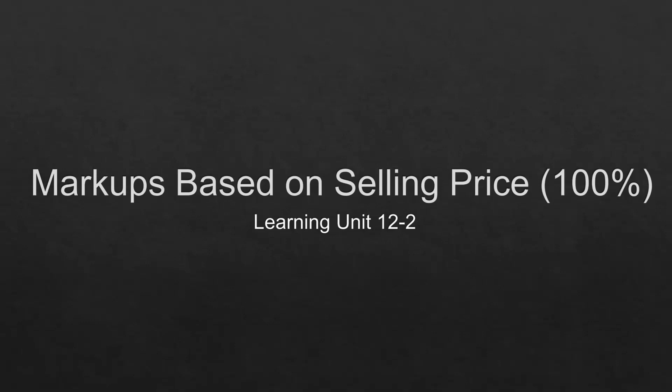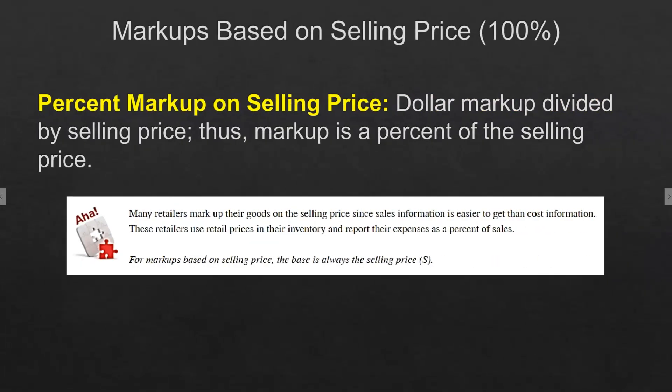Hello everyone, this is section 12-2 and this is about markups based on selling price. Percent markup on selling price is the dollar markup divided by selling price, so the markup is the percent of the selling price. Many retailers mark their goods on the selling price since sales information is easier to get than cost information — they can see it right in their store. There can be a percent markup on cost or on selling price.